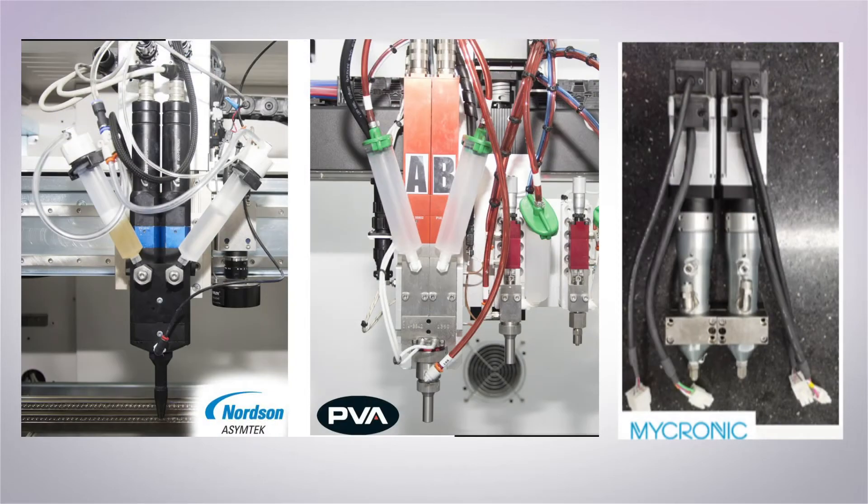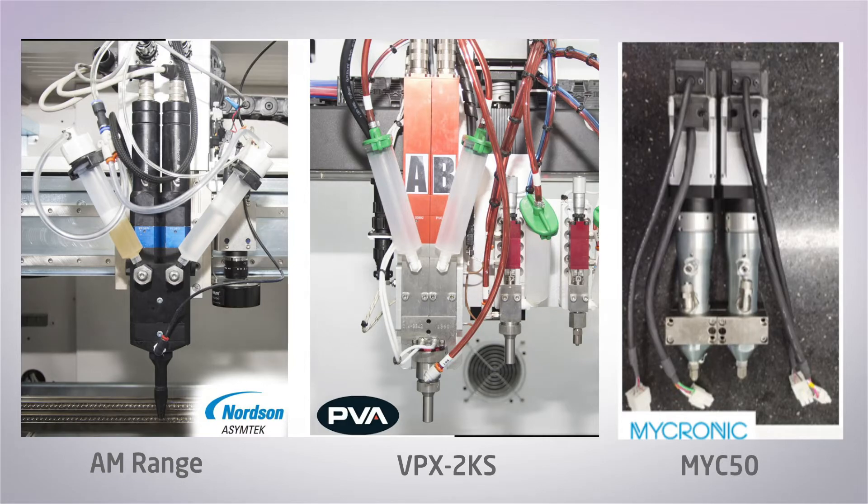So which valves are required for application of 2K materials and how do they work? PVA, Nordson Asimtek, and Micronic have specialist 2K valves available which can be retrofitted to existing production lines. These are the Nordson Asimtek AM range, PVA VPX 2KS, and Micronic MYC50.